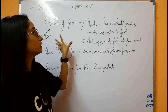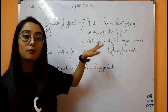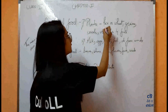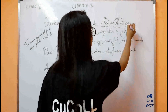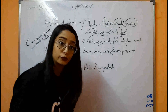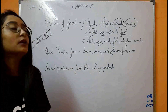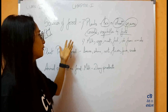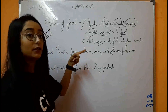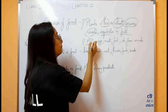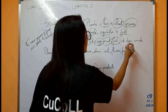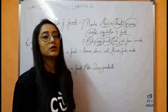Now coming into the sources of food from plants. From plants, we get rice, wheat, grains, cereals, vegetables, and fruits. From animals, we get milk, eggs, meat, and fish.